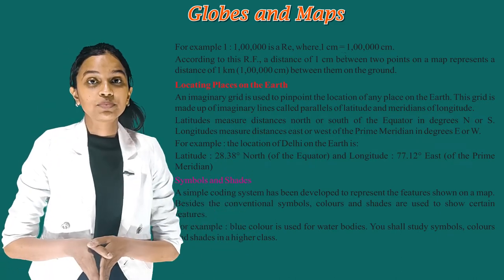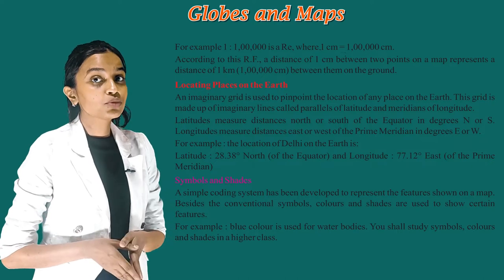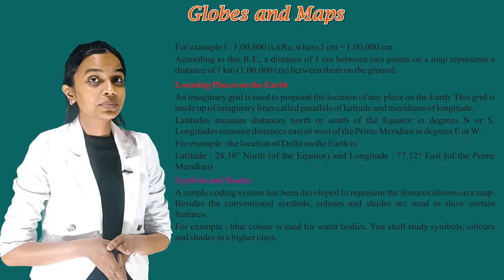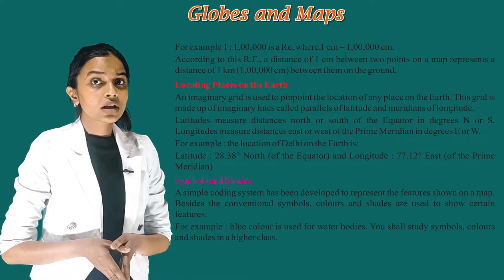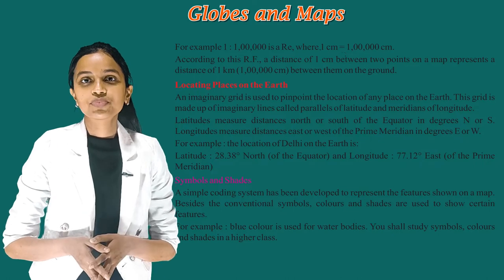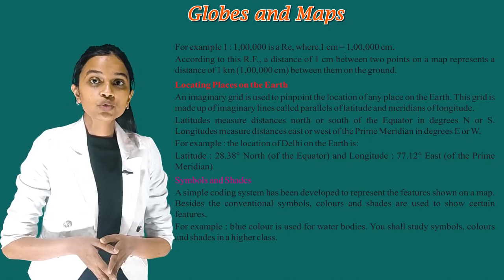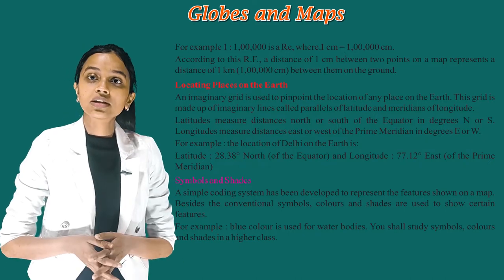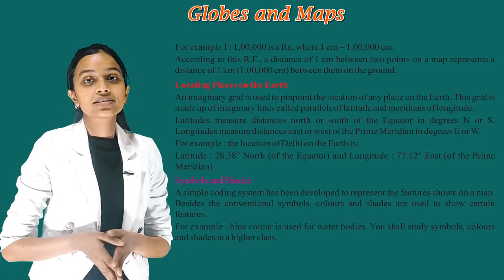Symbols and Shades: A simple coding system has been developed to represent the features shown on a map. Beside the conventional symbols, colours and shades are used to show certain features. For example, blue colour is used for water bodies. You shall study symbols, colours and shades in higher classes.